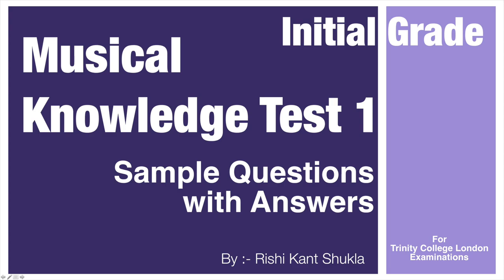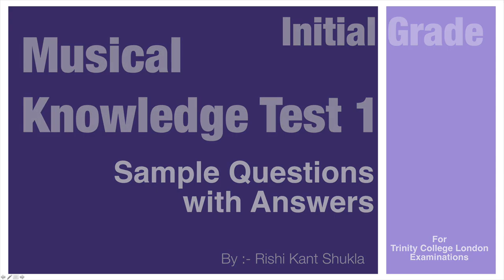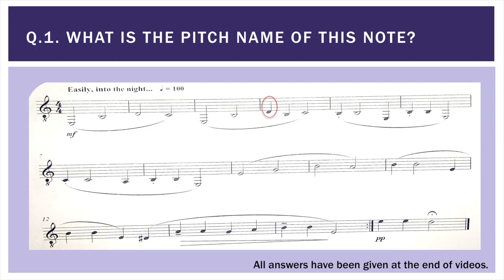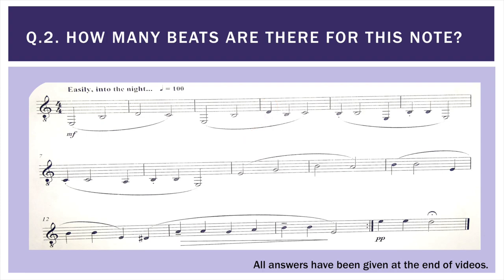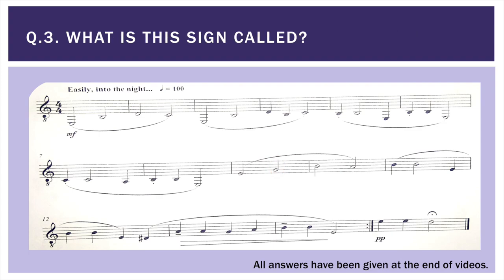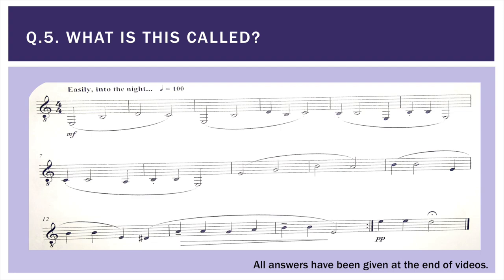Musical Knowledge Sample Questions with Answers for Trinity College London Examinations, Initial Grade. Test 1: What is the pitch name of this note? How many beats are there for this note? What is this sign called? What is this called? What is this called?